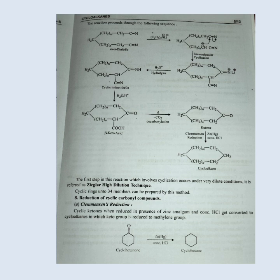Reduction of cyclic carbonyl compounds. Clemmensen reduction: Cyclic ketones, when reduced in the presence of zinc amalgam and concentrated HCl, are converted to cycloalkanes in which the keto group is reduced to a methylene group.